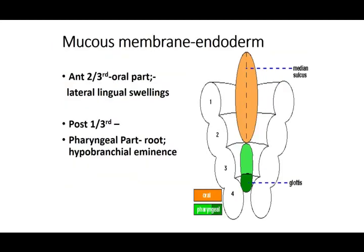The mucous membrane covers this mesenchymal growth: at the anterior two-thirds oral part, it comes from the lateral lingual swellings — that is, the first arch. The posterior third — the pharyngeal part, root, or hypobranchial eminence — gets its mucous membrane from the third and fourth arches. I keep stressing this because we must remember the nerve supply of these areas and from where the swellings arise.